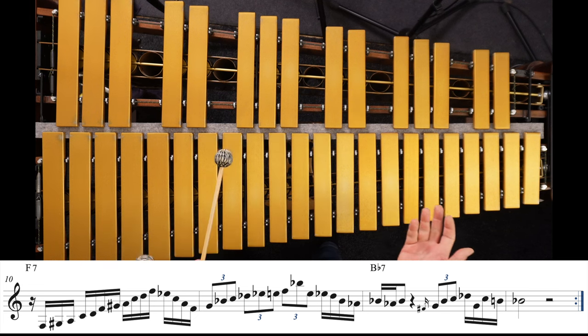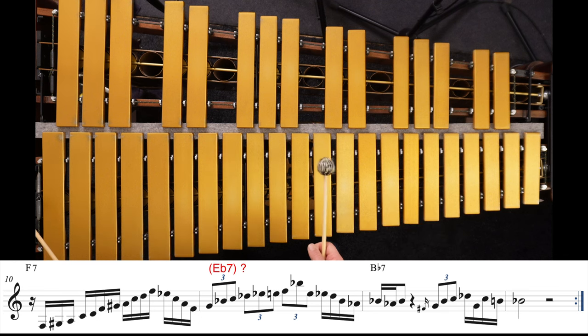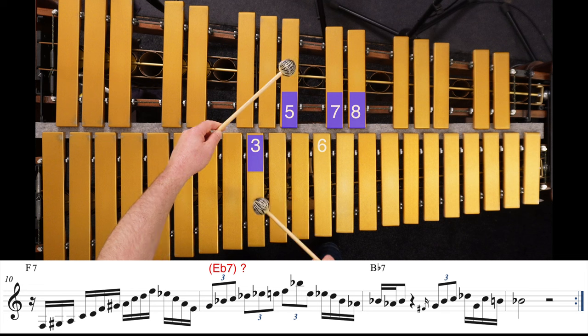And then in the next bar there's no official chord change, but I've actually superimposed an Eb7 type shape even though the F7 chord is still ringing. The shape is basically this.